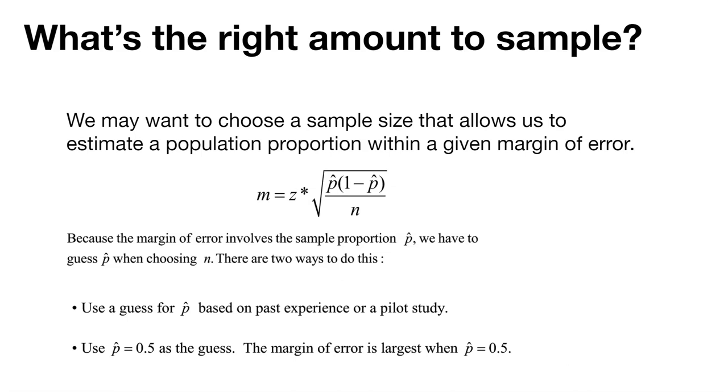A good way to think if you have no knowledge of what the p hat is, if you have no idea what that sample proportion is, is just to use 0.5. This is because the margin of error is the largest when we choose a value p hat of 0.5. There are some ways you can prove that or visualize that with some simulations.